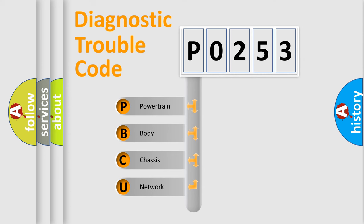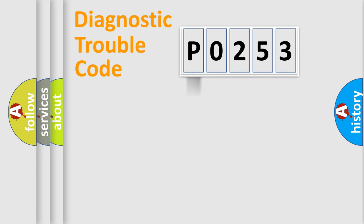We divide the electric system of an automobile into four basic units: powertrain, body, chassis, and network. This distribution is defined in the first character of the code.